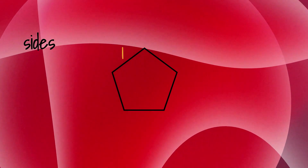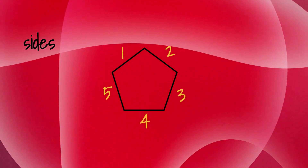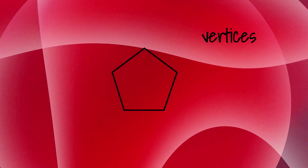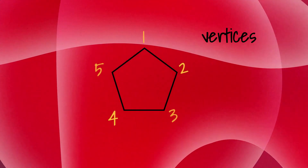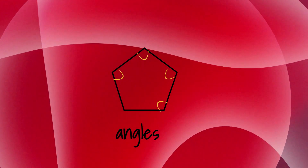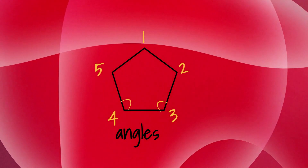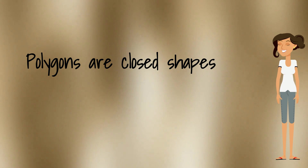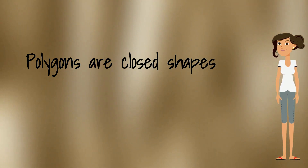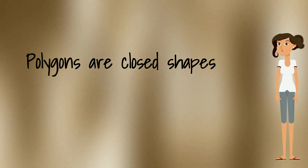For example, this polygon has only five sides, five vertices, and five angles.